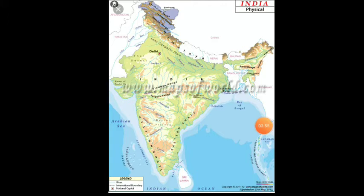The next type is physical maps. Physical maps show the physical features of an area such as mountains, rivers, and lakes. Maps drawn to show physical features of the earth such as rivers, oceans, mountains, plateaus, and plains are called physical maps.